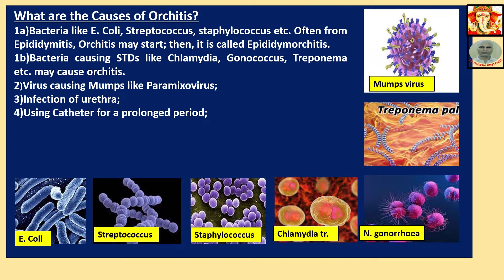What are the causes of Orchitis? Number 1a: Bacteria like E. coli, streptococcus, staphylococcus, etc. Often from epididymitis, Orchitis may start — that is, one infection, epididymitis, gives rise to another infection, Orchitis. It is also called epididymo-orchitis. Number 1b: Bacteria causing STDs like Chlamydia, Gonococcus, Treponema pallidum, etc. may cause Orchitis. Virus causing mumps like Paramyxoviruses is also responsible. Infection of urethra, and using a catheter for a prolonged period also causes Orchitis. These various pictures as referred to above are shown — please correlate and you can understand.